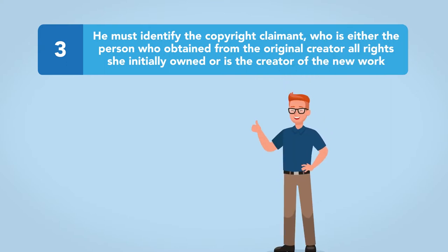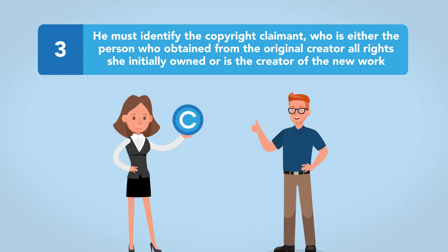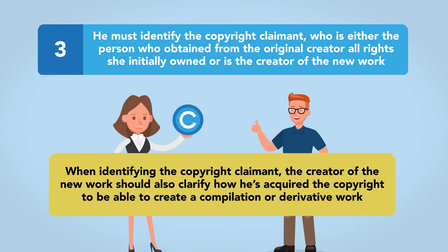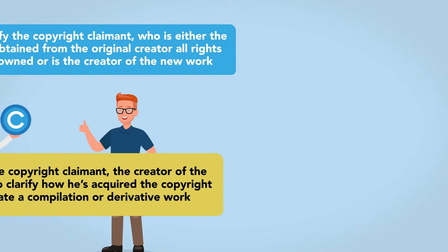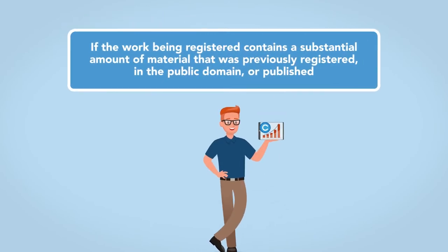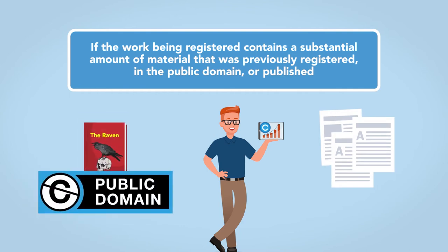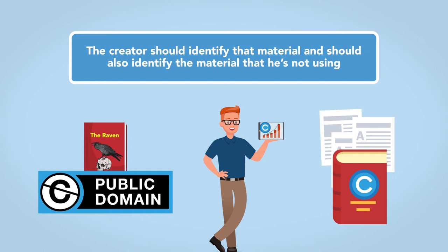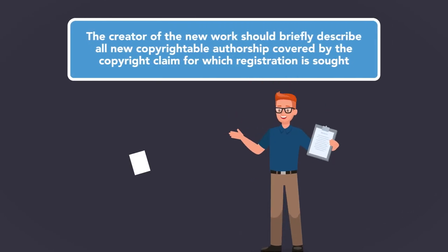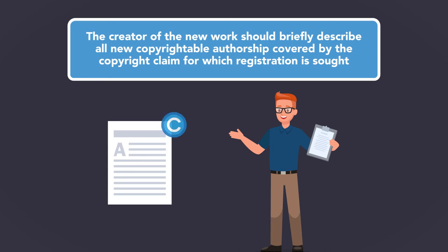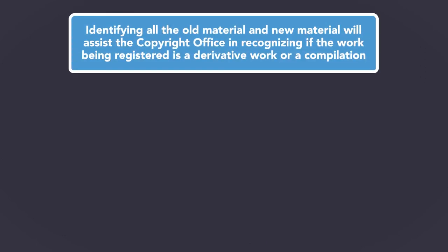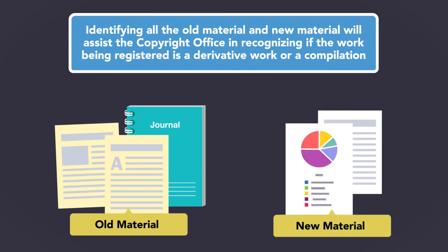Third, he must identify the copyright claimant, who is either the person who obtained from the original creator all rights she initially owned, or is the creator of a new work. When identifying the copyright claimant, the creator of the new work should also clarify how he acquired the copyright to be able to create a compilation or derivative work. If the work being registered contains a substantial amount of material that was previously registered, in the public domain, or published, the creator should identify that material and also identify the material that he is not using. Finally, the creator of the new work should briefly describe all new copyrightable authorship covered by the copyright claim for which registration is sought. Identifying all the old material and new material will assist the Copyright Office in recognizing if the work being registered is a derivative work or a compilation.